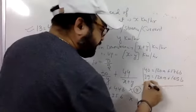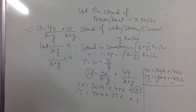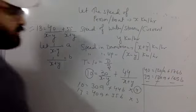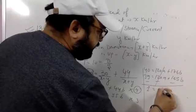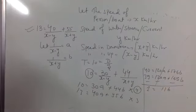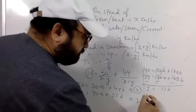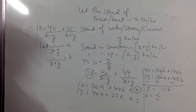Now if I subtract, a cancel out ho gaya? Yes sir. 40 minus 39, 1. Or yahan se b aa raha hai, 11b? Yes sir. So b ki value aa gaya 1 by 11?